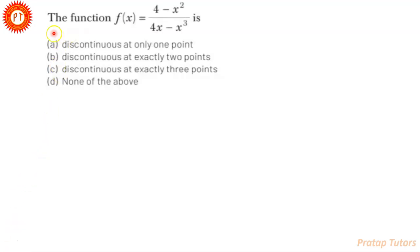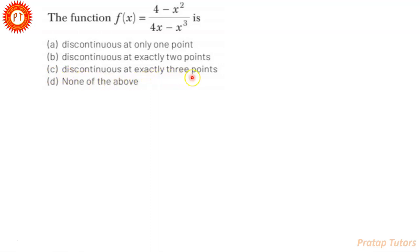The question says that the function f(x) is equal to (4 minus x squared) divided by (4x minus x cubed). Option A is discontinuous at only one point, option B is discontinuous at exactly two points, option C is discontinuous at exactly three points, and option D is none of the above.